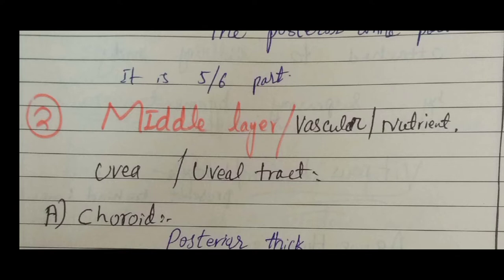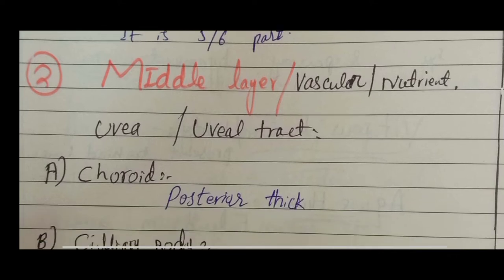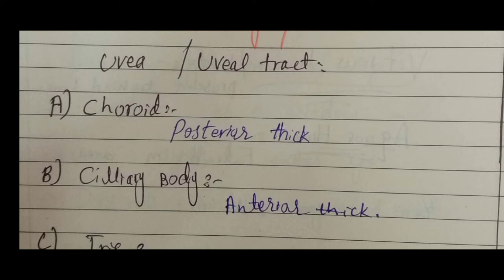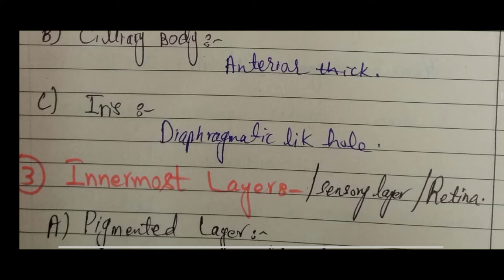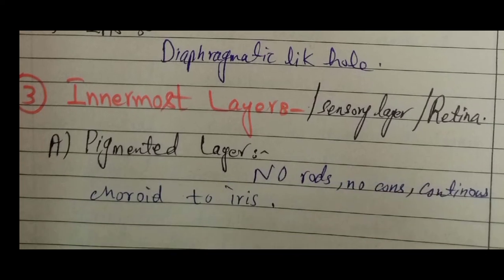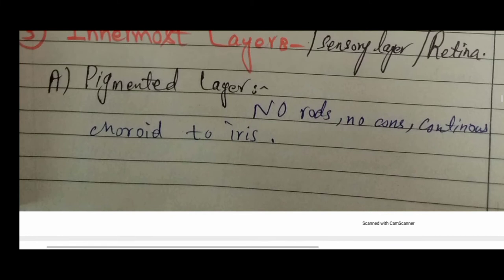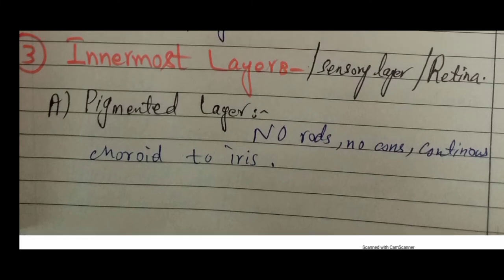The middle layer is also known as the nutrient layer, uvea, or uveal tract. It consists of three parts: the choroid, the ciliary body, and the iris. The choroid is the posterior thick part, the ciliary body is the rear thick part, and the iris is the diaphragmatic structure through which light passes towards the lens. The innermost layer, or third layer, is also known as the sensory layer or retina, which consists of a pigmented layer and a neuronal layer. The pigmented layer does not have rods and cones.